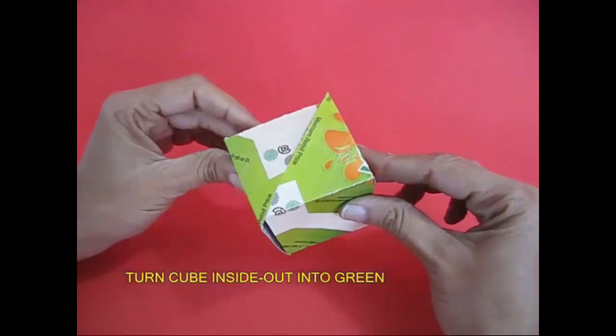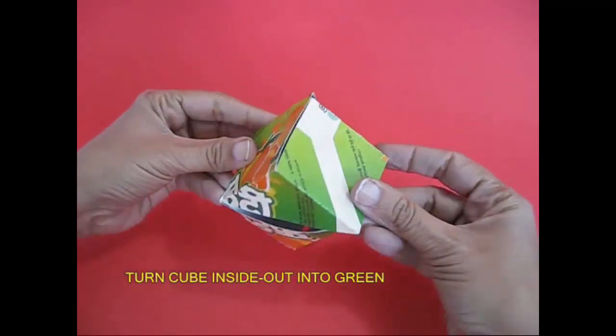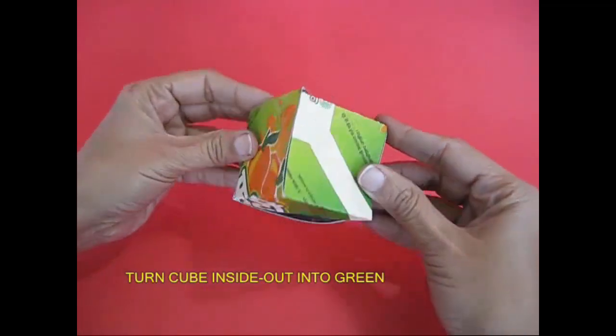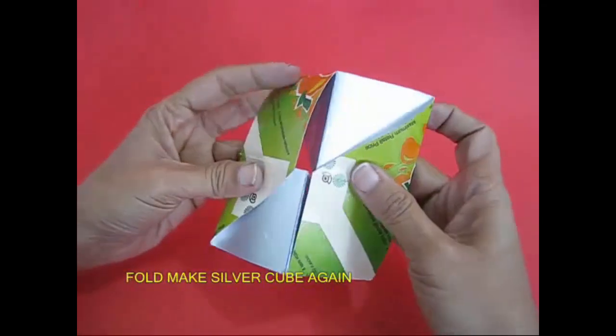Now see, when you flip it, it is green. It is a green cube. If it is silver, then it is green.